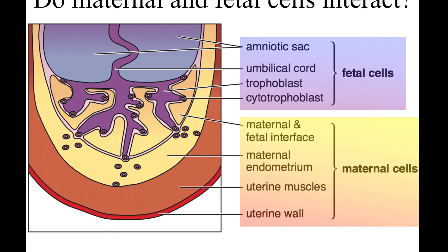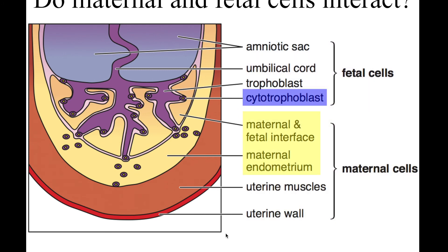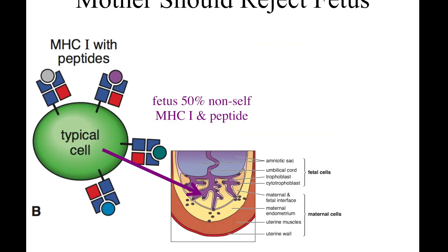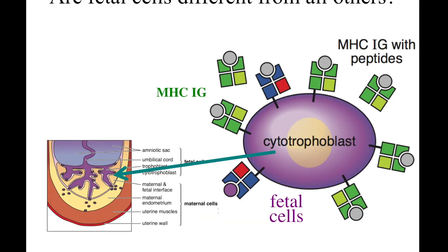Getting back to the question of babies and moms: in the gestating mom, there is the fetal side of the tissue — shown here in blue — and the mom's side of the tissue in brownish. You can see they are in close interaction with each other, specifically cells called cytotrophoblasts interacting with the maternal-fetal cell interface in the placenta. When looking at those cells in this area, they looked at the kinds of MHC molecules discovered there, and they discovered a new kind called MHC IG. IG stands for immunoglobulin, which is another name for antibody.